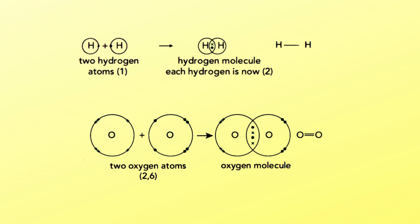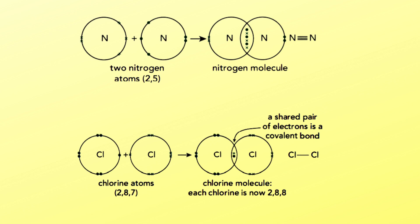There is a double bond between the two oxygen atoms. The nitrogen molecule has a triple bond, sharing three pairs of electrons — three electrons per nitrogen atom. Similarly, chlorine molecule has one shared pair of electrons, forming a single bond.